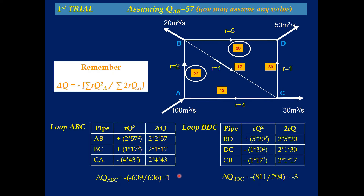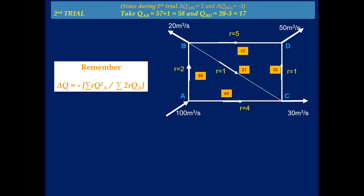Since these ΔQ values are not negligible, we go for a second trial. The values for the second trial depend on the results of the first trial. ΔQ for loop ABC is 1 and ΔQ for loop BDC is minus 3. So the flow in pipeline AB becomes 57 + 1 = 58, and for BD it becomes 20 − 3 = 17. We then find all other flow values corresponding to these updated values.